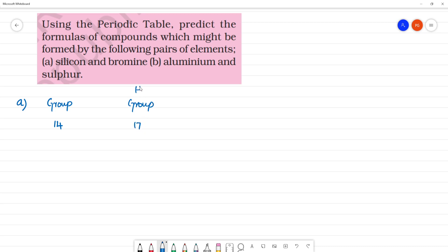Bromine, what group? Halogens. Here it is silicon. Silicon, what group? Group 14. Carbon group.